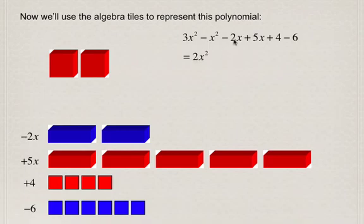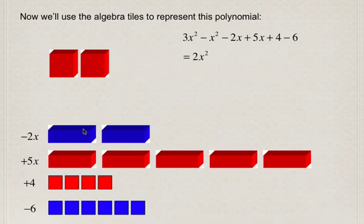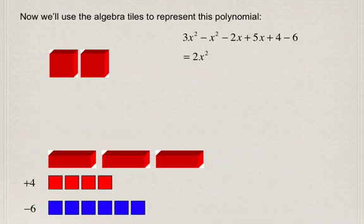Looking at the next operation — negative 2x plus 5x — each of the negative x's cancels out one of the positive x's and becomes zero. So the two negative x's cancel out two of the positive x's, and we're left with 3x. Therefore, negative 2x plus 5x equals positive 3x.